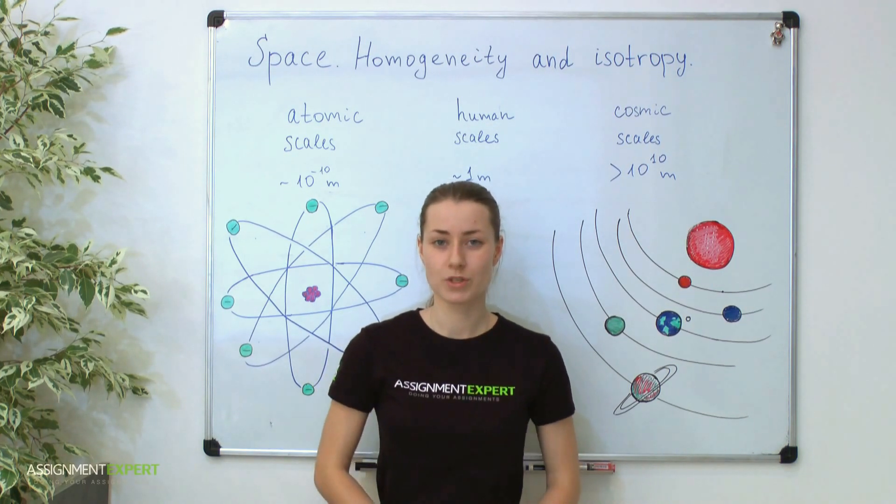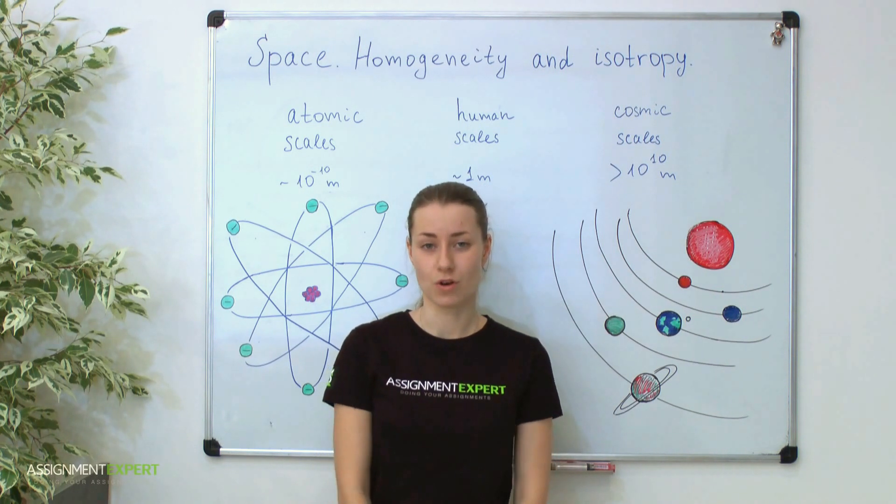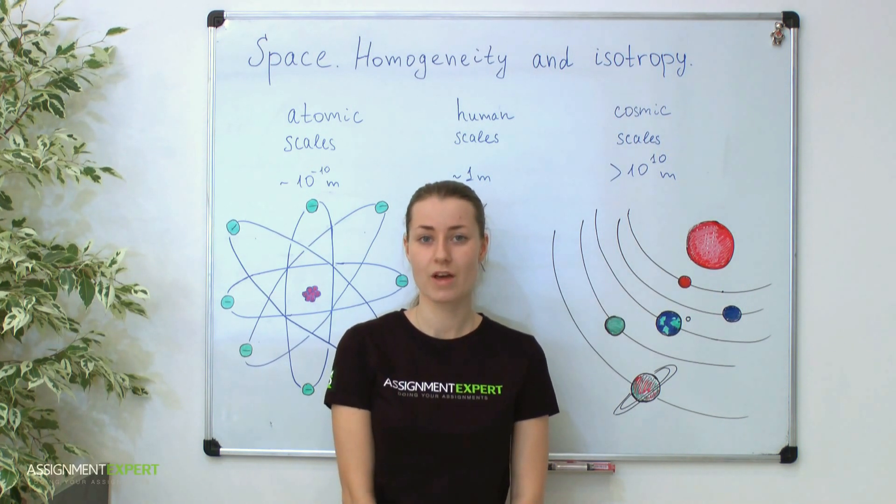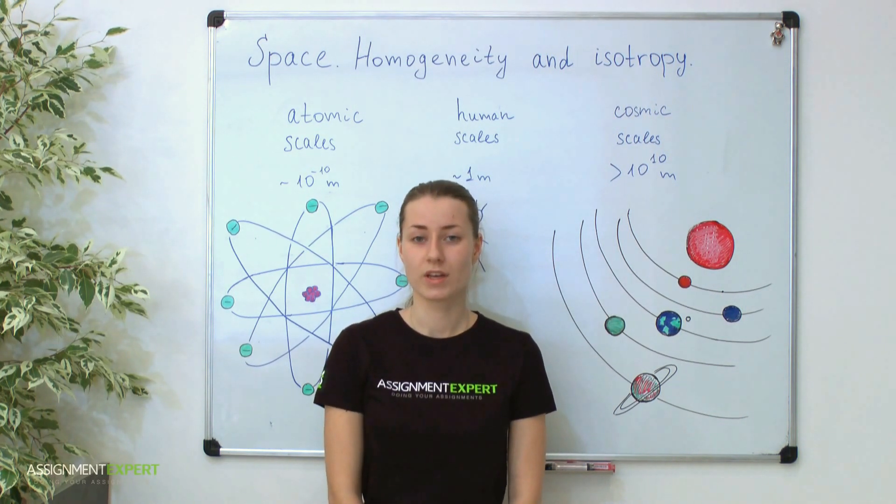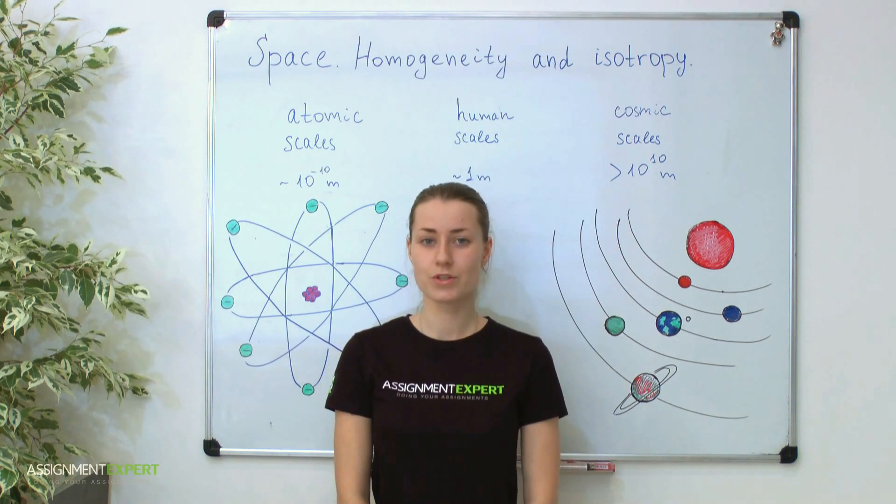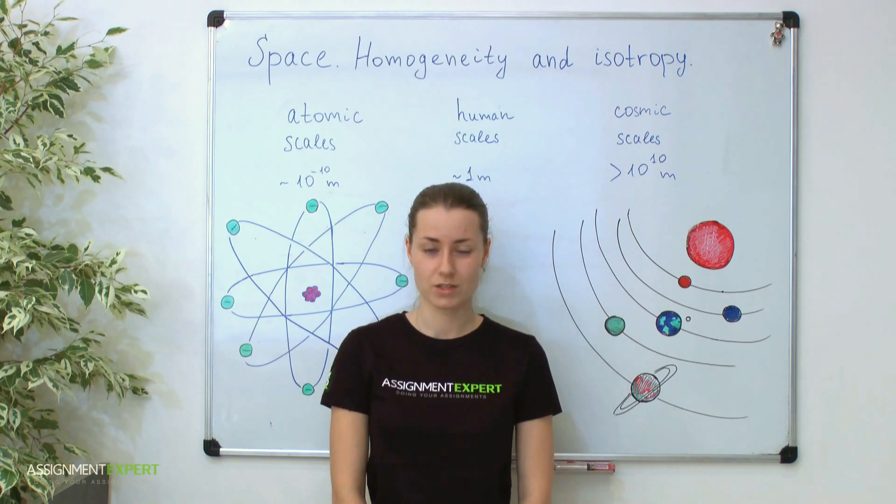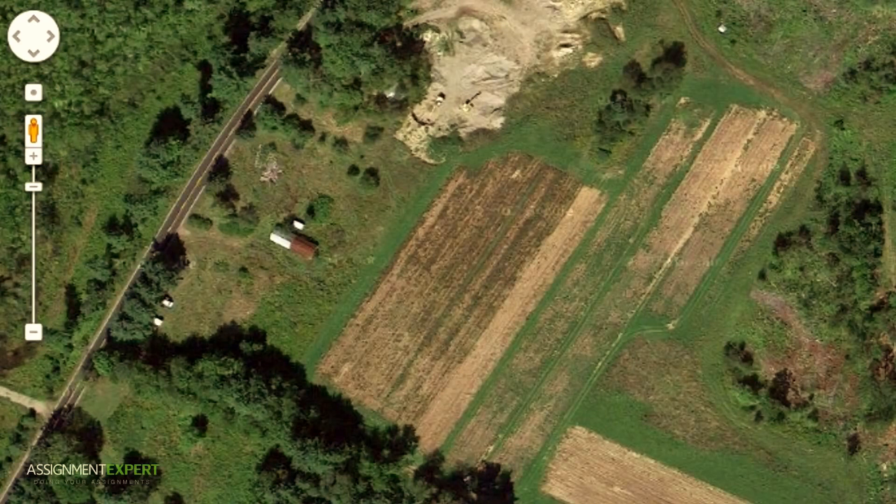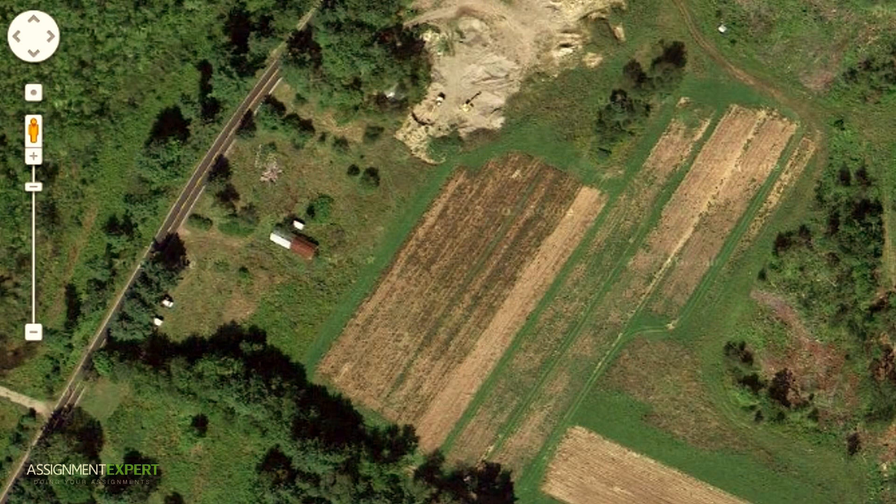Moreover, to see such properties as homogeneity and isotropy you do not necessarily have to climb so high. Say you can easily find a snapshot of the Earth's surface taken from a satellite. Look, this is a snapshot around Ramon state in the USA.